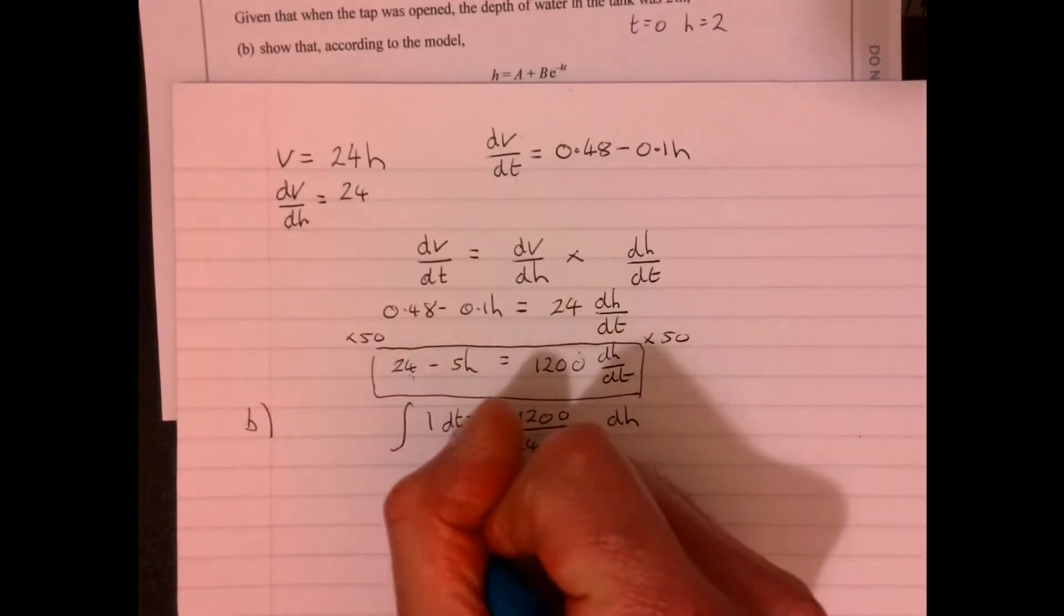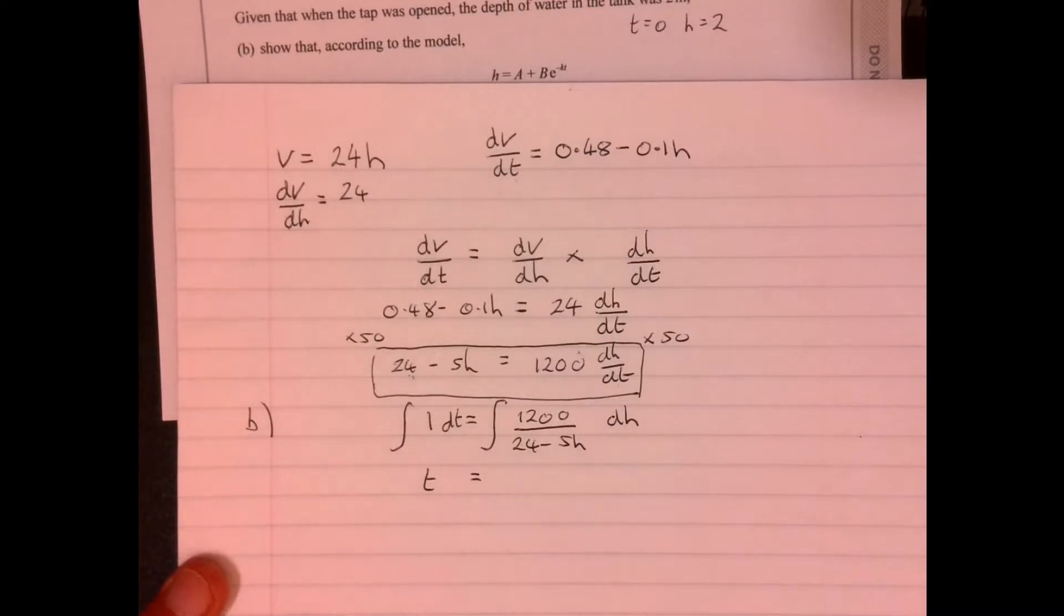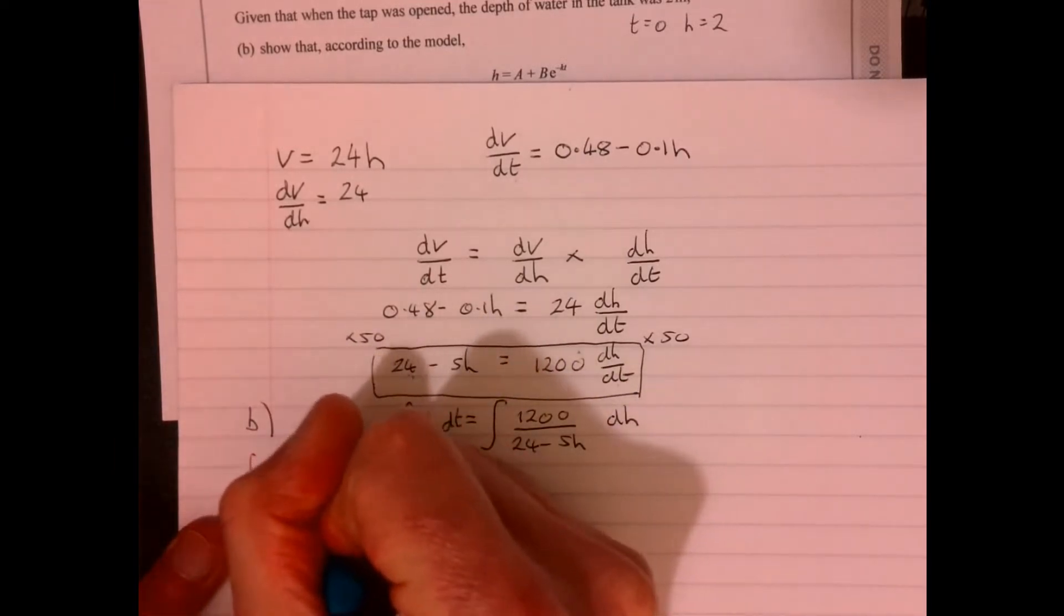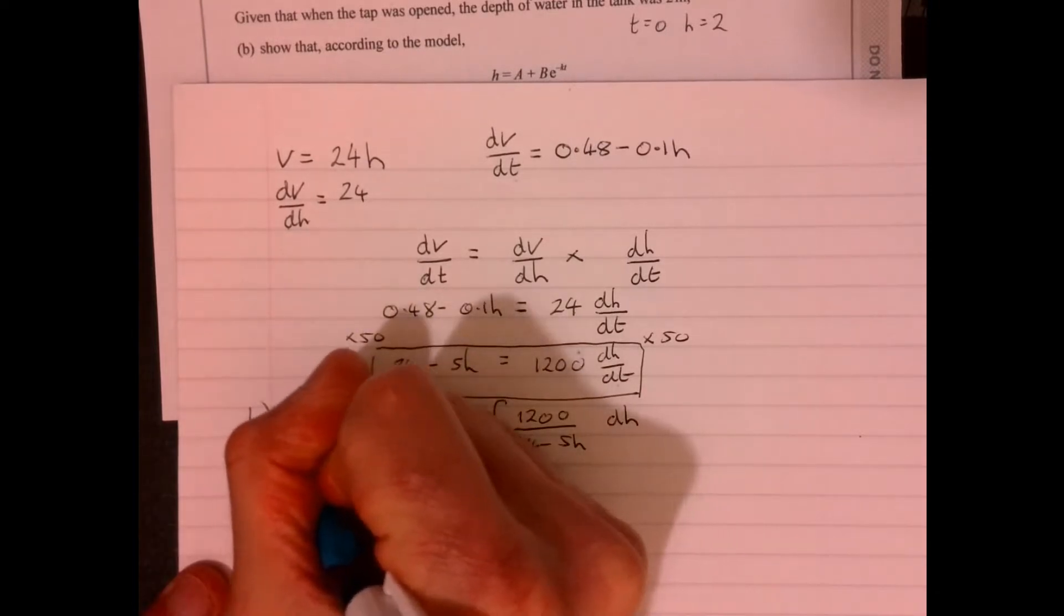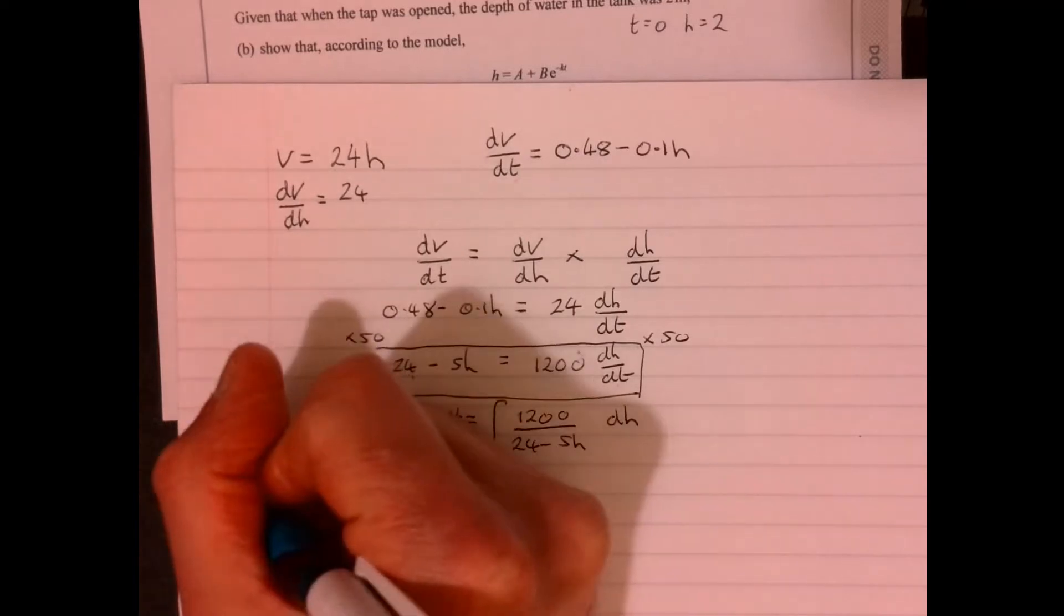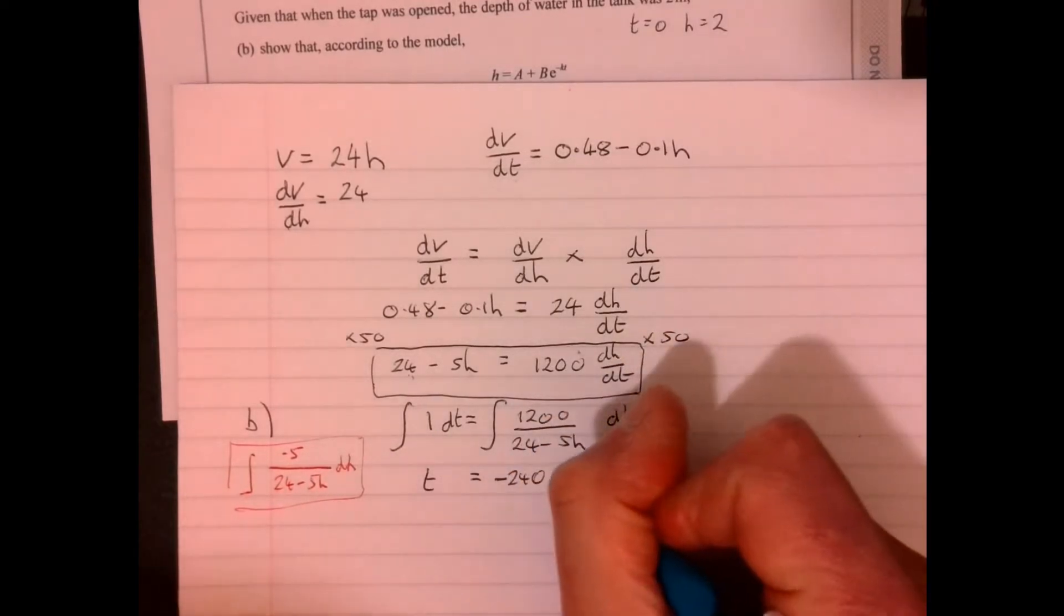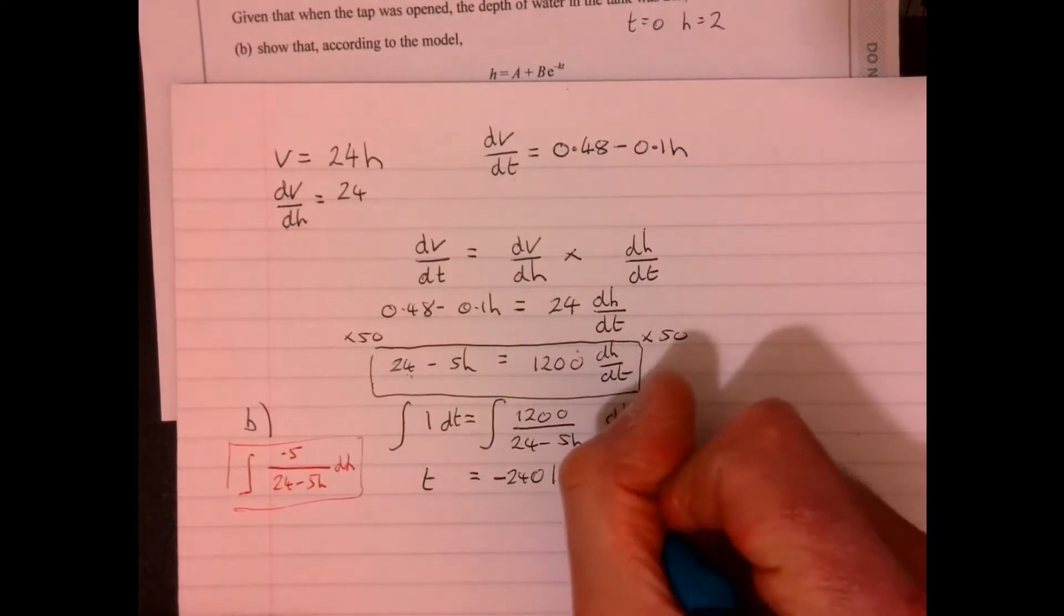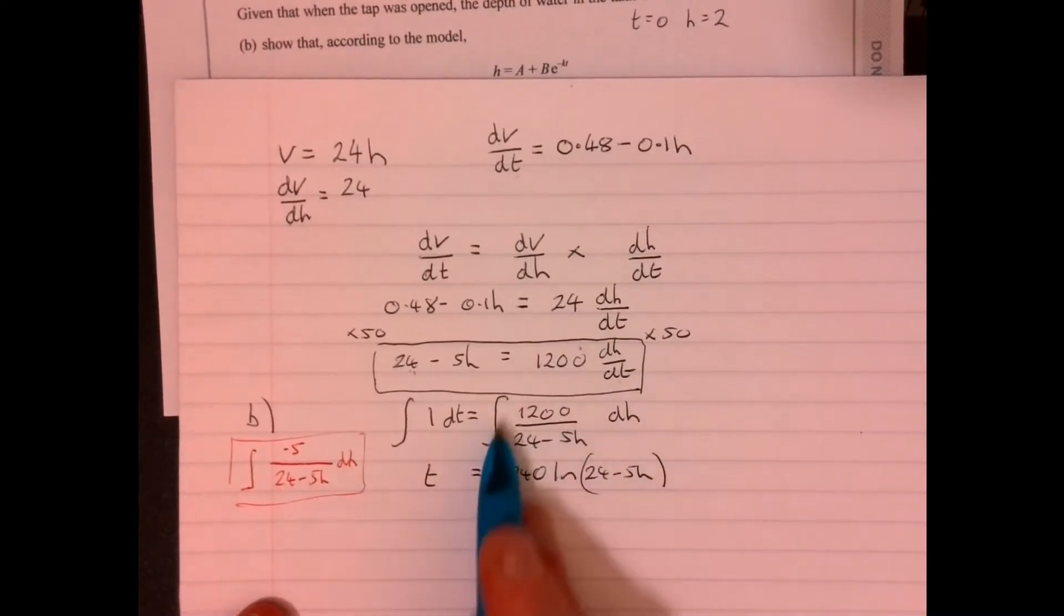So what do we have now? Well, if I integrate this side, I've got t equals. Now, integrating this bit here. What you should know is that if I differentiate 24 minus 5h, that's minus 5. If I were to integrate this, I would get ln 24 minus 5h. This is actually minus 240 times bigger. So our answer is simply going to be minus 240 times ln 24 minus 5h. Now, the bit that people tend to forget on this question is that when we integrate, and it's not between limits, don't forget that's a plus c.